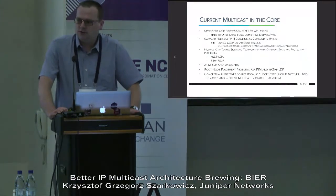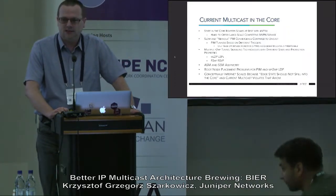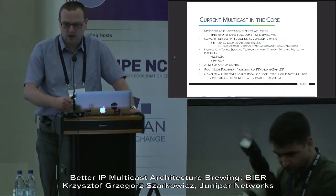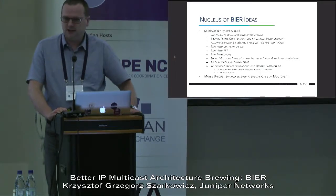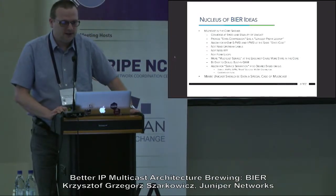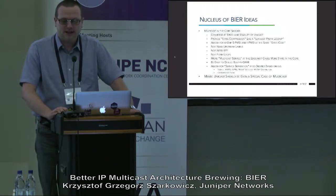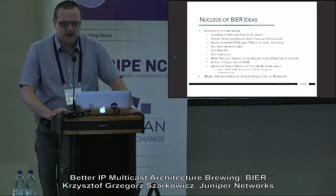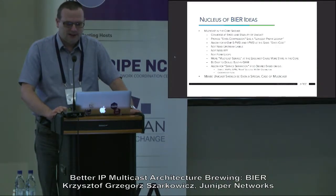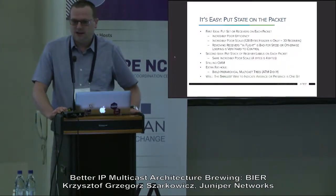The concept we follow here is the same as with Segment Routing. Segment Routing is basically stateless delivery of the unicast packet — we don't have any states in the core of the network associated with delivery, because we have only MPLS labels that we stack. BIER follows a similar approach. The requirements for BIER: it should converge very fast, provide state compression — no states in the network — and provide support for selective and inclusive multicast trees, no need for upstream labels, no need for RPF, and it should avoid loops.